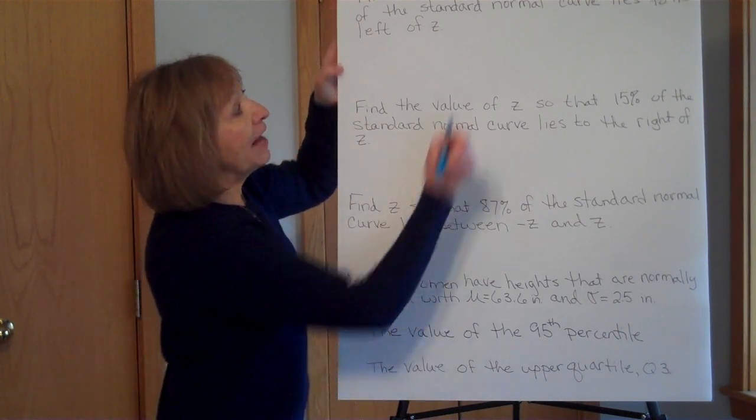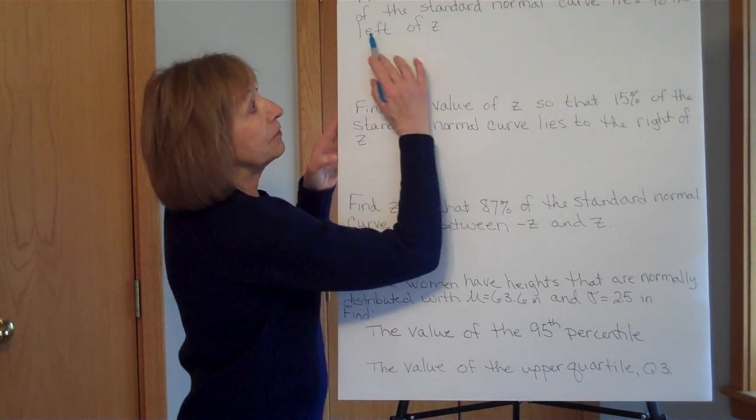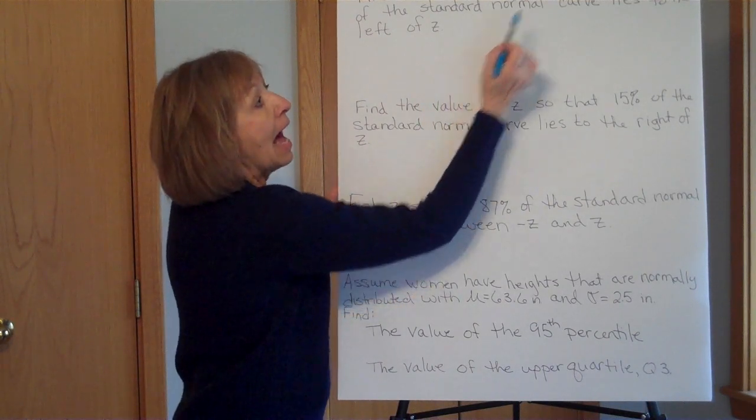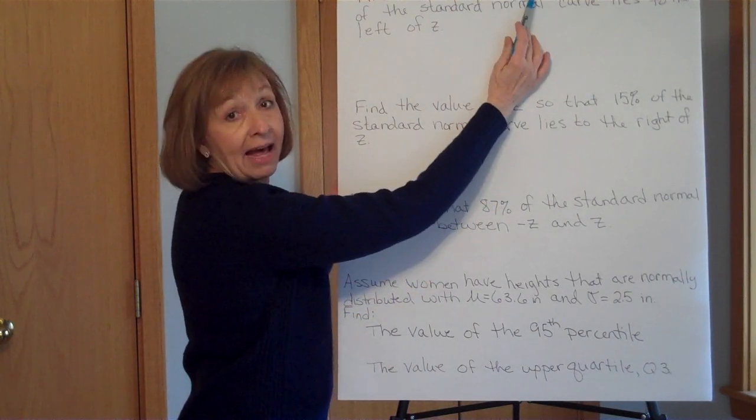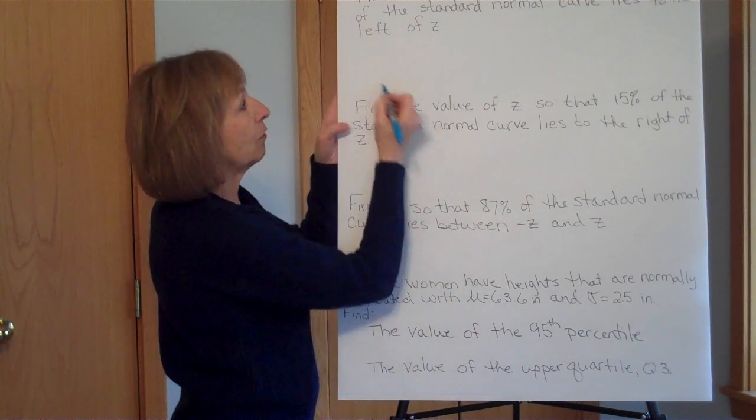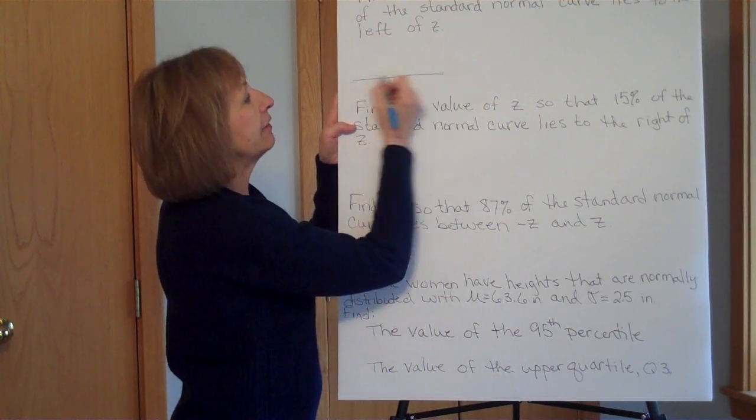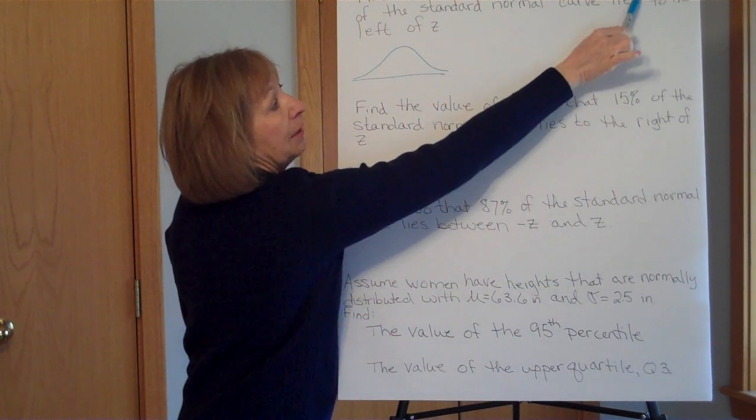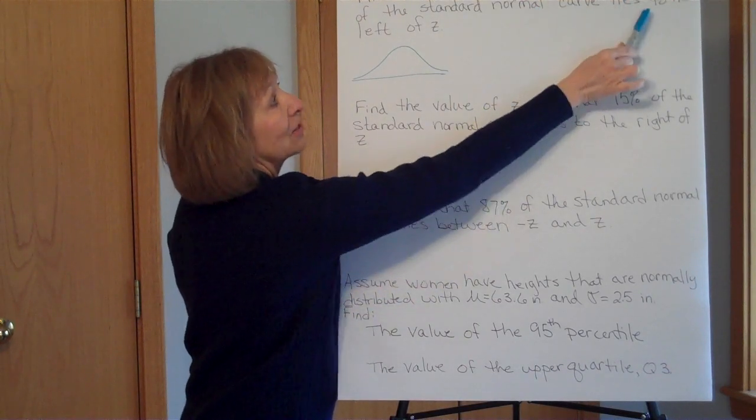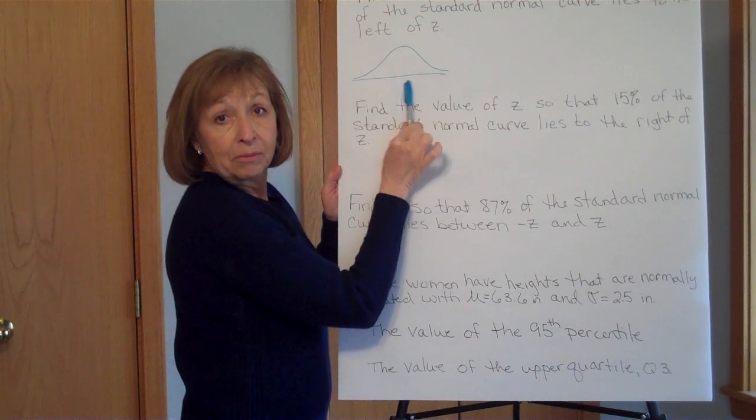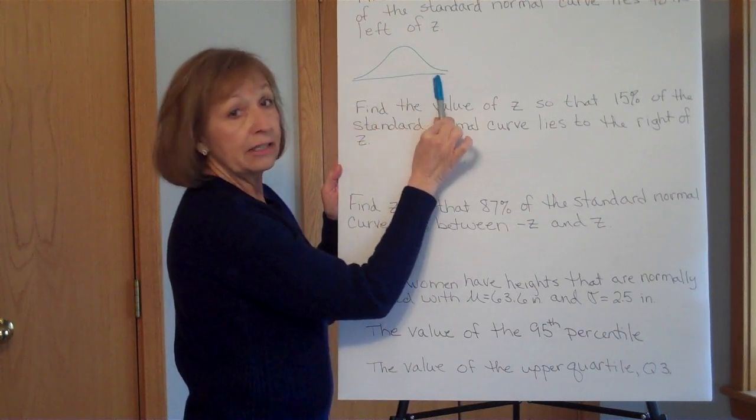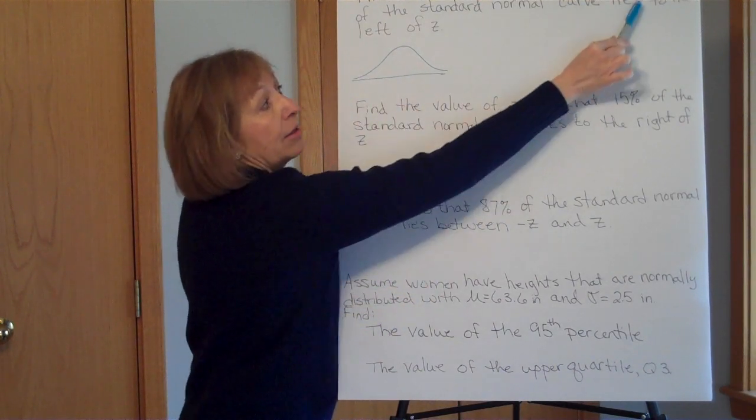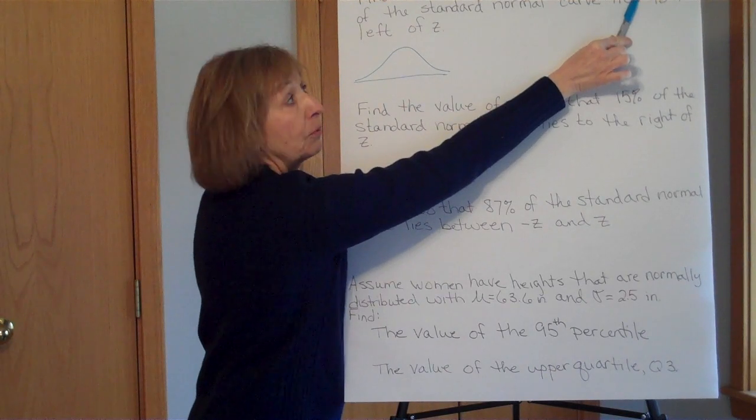So here, it says find the value of z so that 3.8% of the standard normal curve lies to the left of z. So thinking about the number on the number line, that's your z's or your raw scores, and you want the shading to go to the left, and it's only 3.8%, so 0.038.